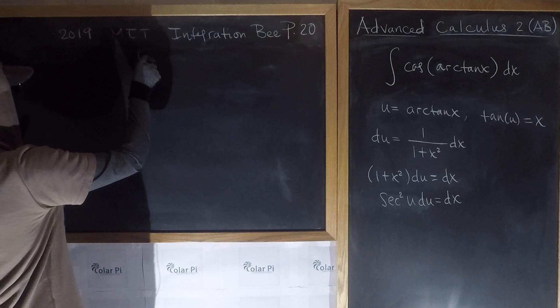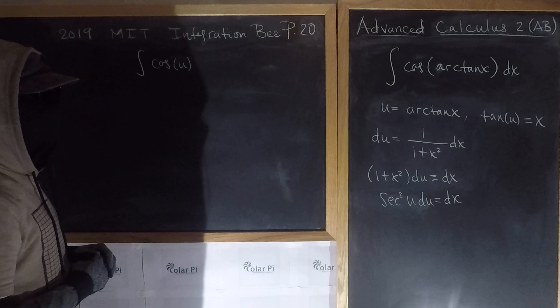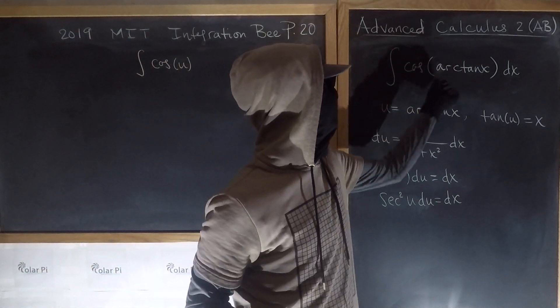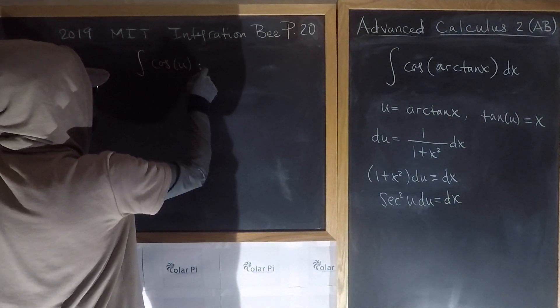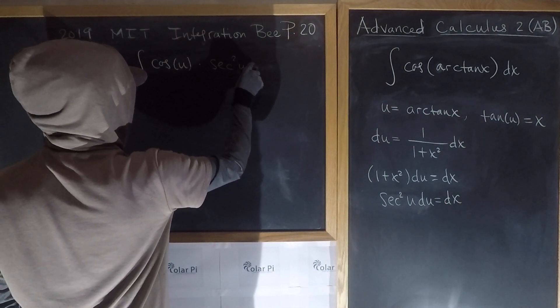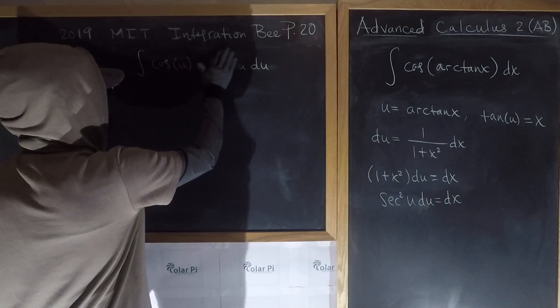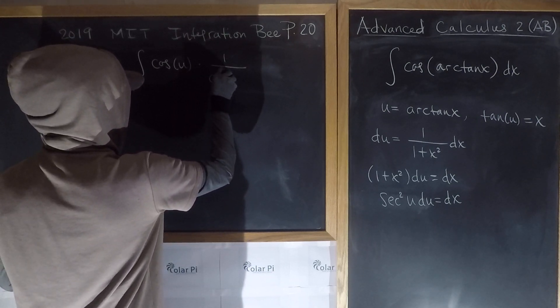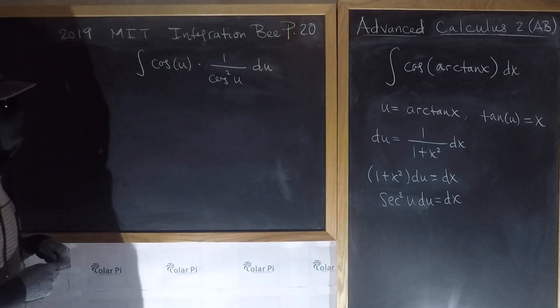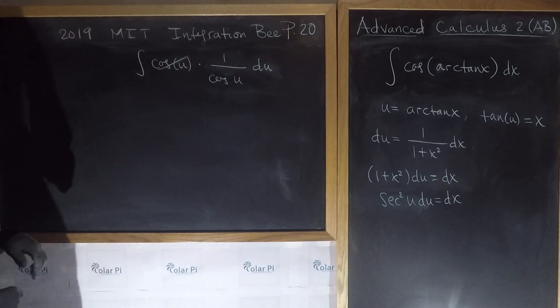So that means that the given integral is the same as cosine of u, and then dx is sec²(u) du. So cos(u) times sec²(u) du. But remember sec² is 1 over cos². So this is 1 over cos²(u) du. And then we could cancel this cosine with one of the cosines here, so we see that what we have is 1 over cos(u) du.